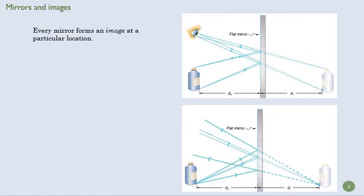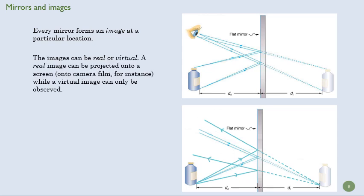Every mirror forms an image at a particular location. And these images can be real or virtual. A real image can be projected, while a virtual image can only be observed.